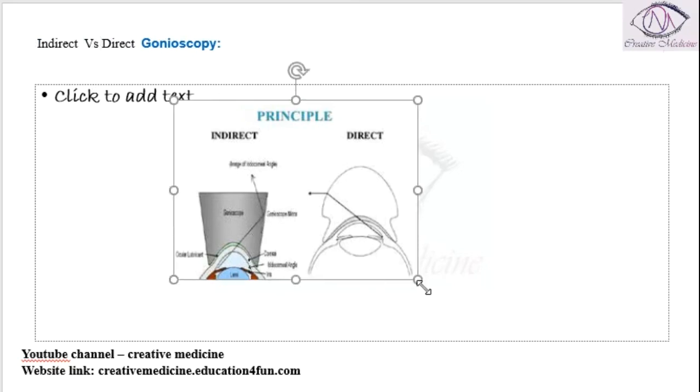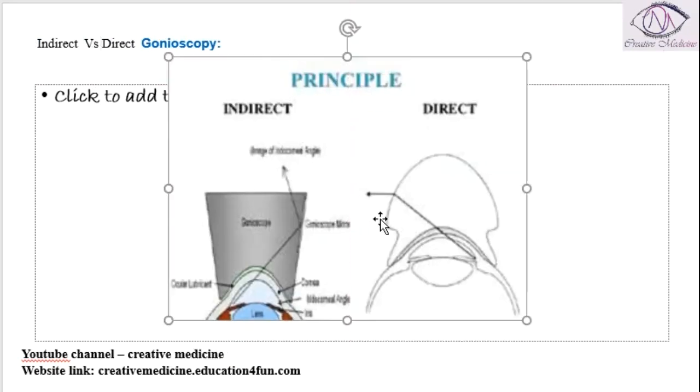This picture shows how the light falls. In direct Gonioscopy, you will see directly from the edge corner of the eye. You will see directly the angle of the lens. You should directly see the angle of the anterior chamber.